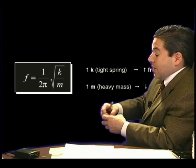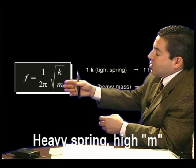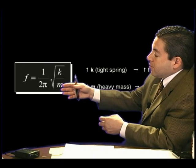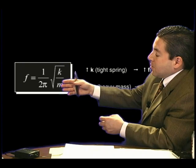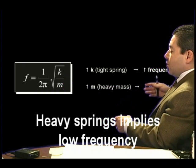On the other hand, if you have a very heavy spring with a heavy mass m sitting there, actually the frequency will be lower. That's because the mass is in the denominator, and you have a lower frequency.